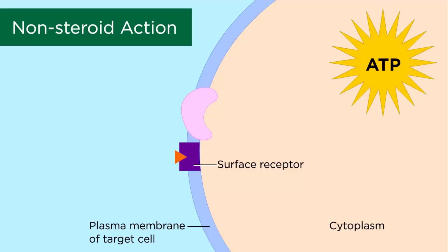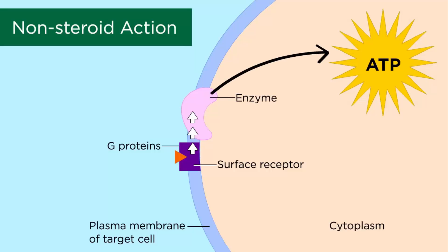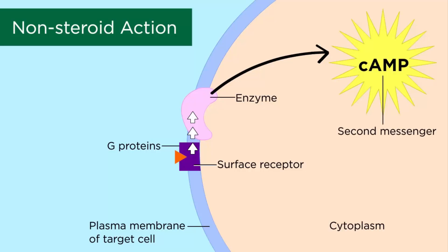There are proteins on the intracellular side of the target cell that are associated with the receptor. Most often, this involves what's called a G-protein. This G-protein is found next to an enzyme that converts ATP to a molecule called cyclic AMP, or cAMP. Cyclic AMP is called a second messenger because it signals a cascade of events that eventually change the enzymatic activity in a cell to cause the target cell response.